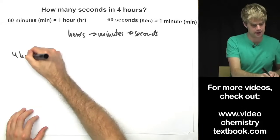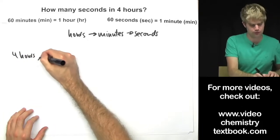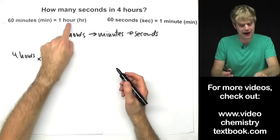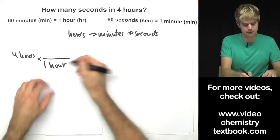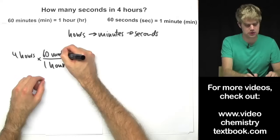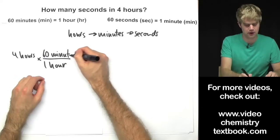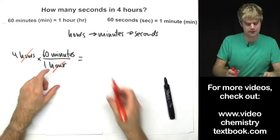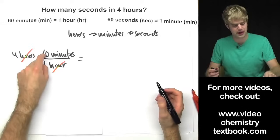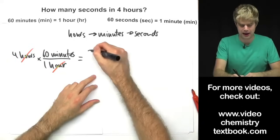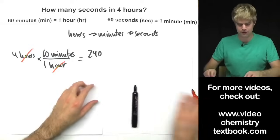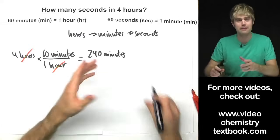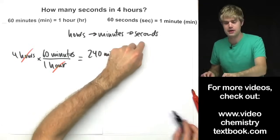I'm going to start with four hours, and we multiply that by a conversion factor to get rid of hours. So hours goes on the bottom — one hour — and sixty minutes goes on the top. Hours on top and hours on the bottom cancel out. I do four times sixty divided by one and I get two hundred and forty; the units here are minutes.